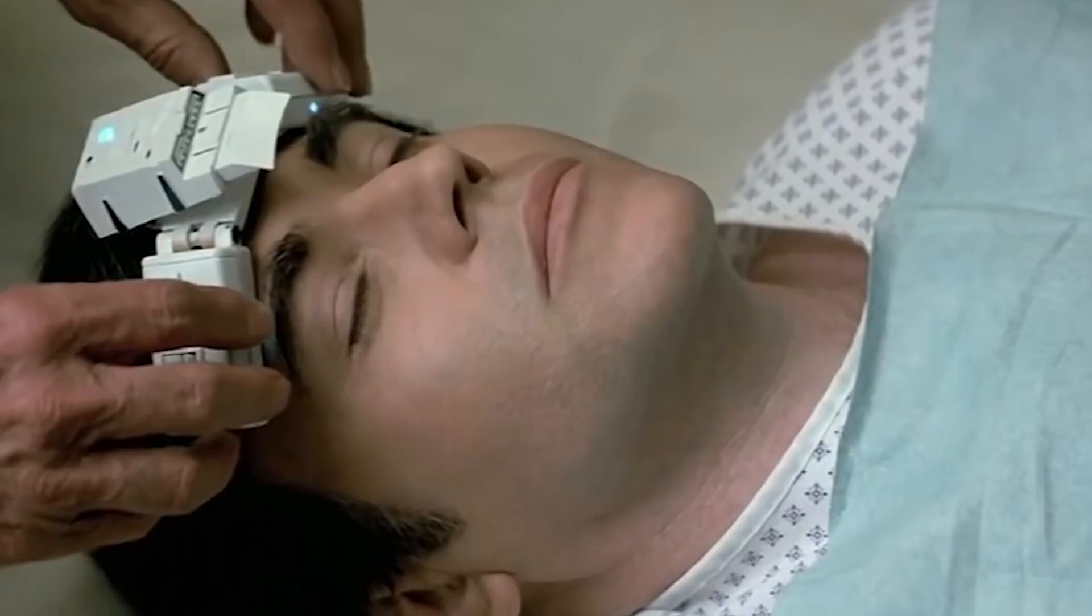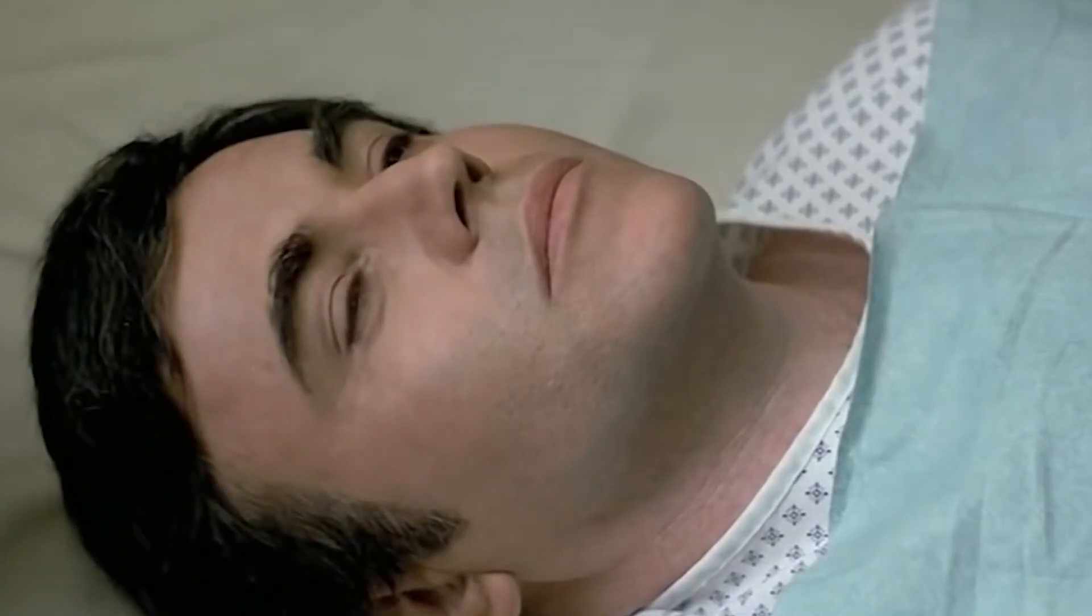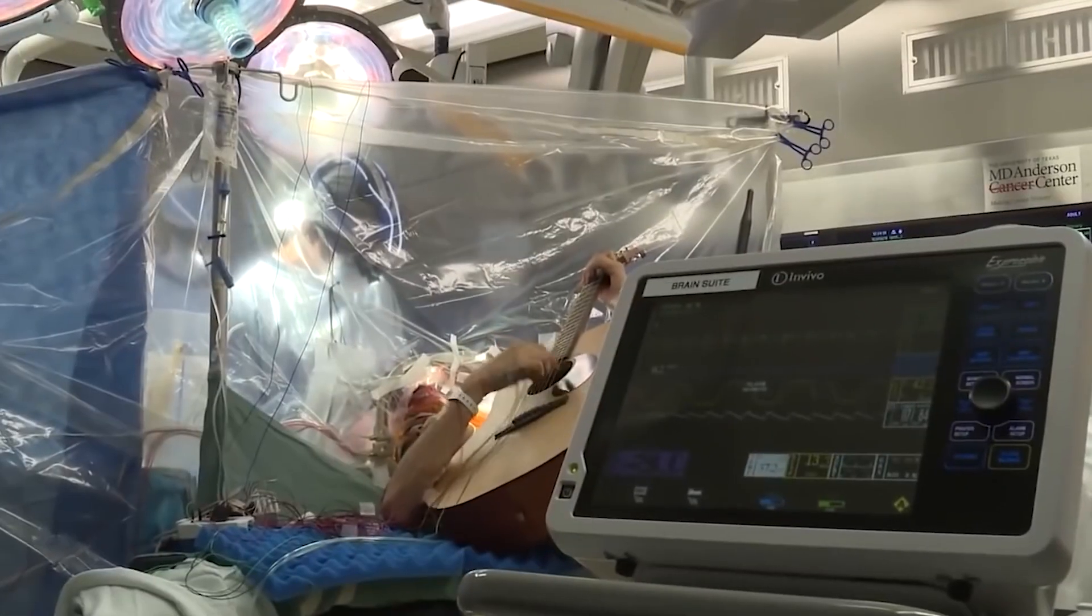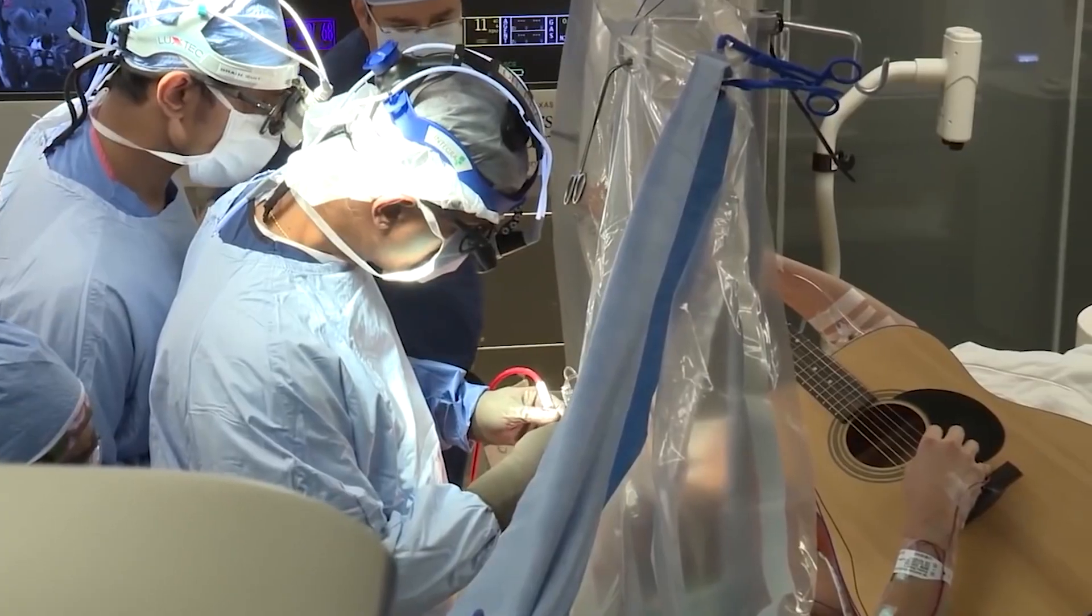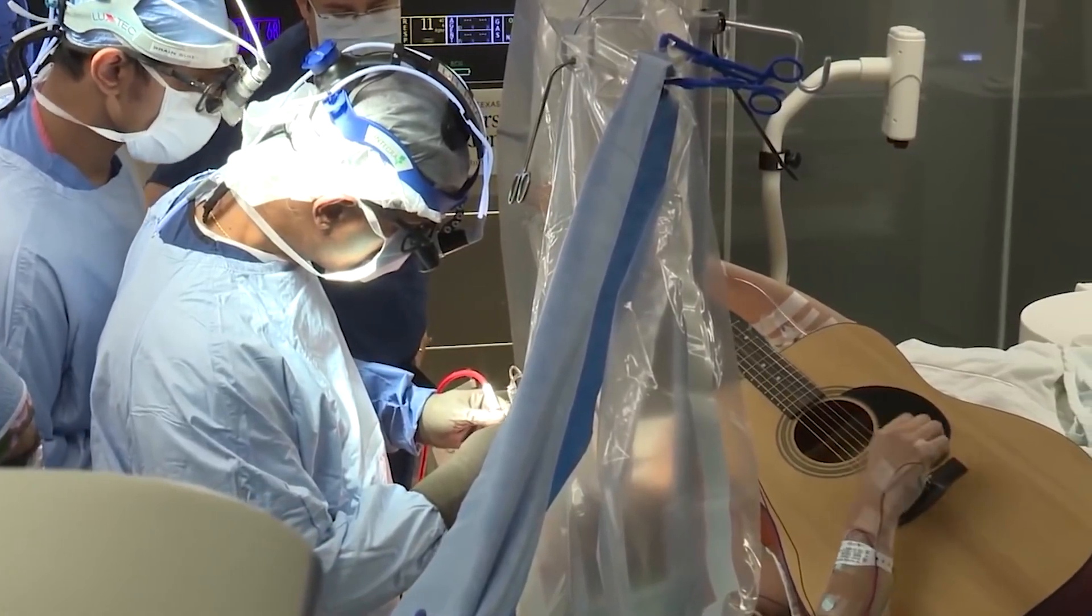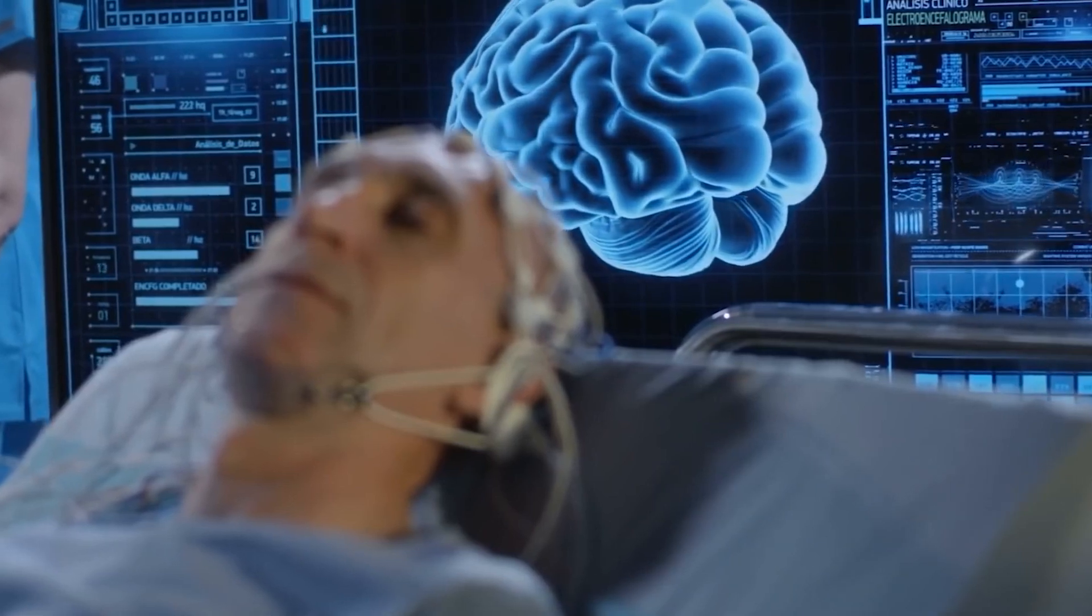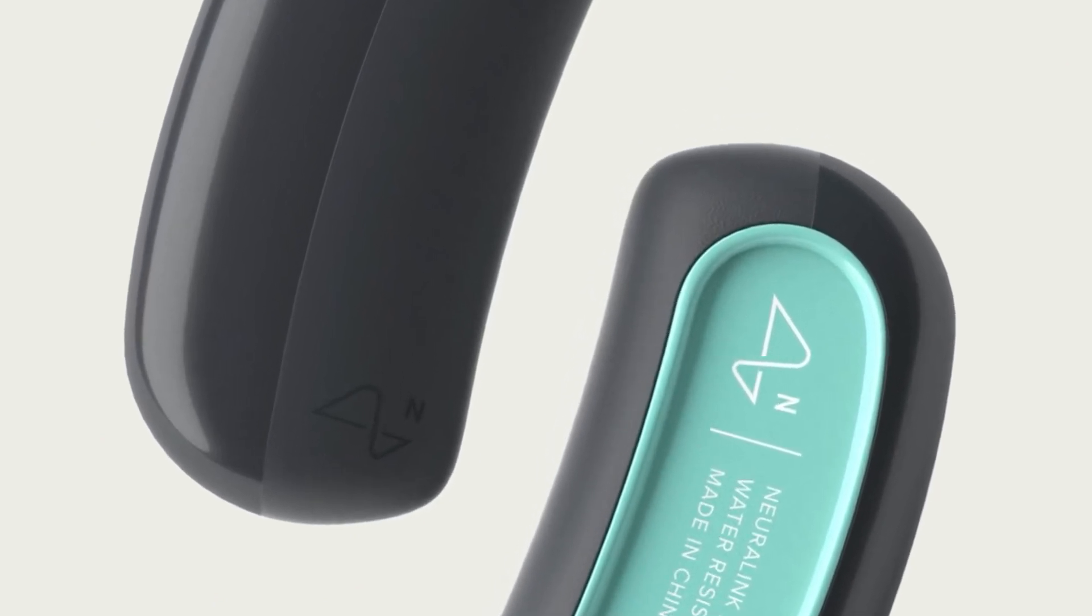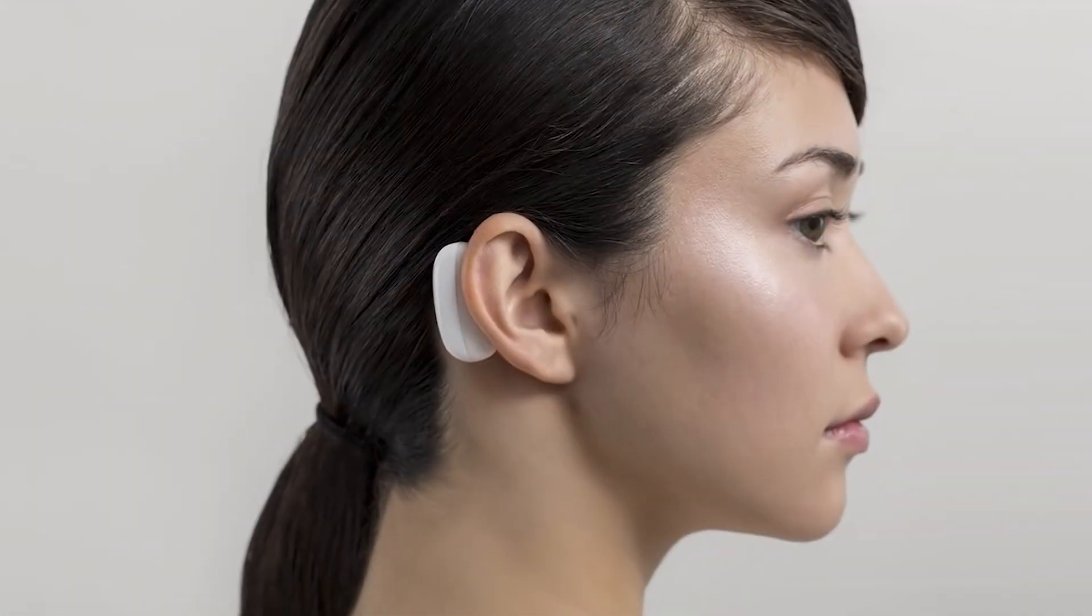Who will want one? For the time being, Neuralink is developing a brain chip to aid in the treatment of major medical disorders. But Musk hopes that it will someday appeal to a wide range of individuals. However, several experts believe that most people will not be clamoring for Neuralink's brain chip. It's really like a science fiction vision that gets certain people enthusiastic about it.